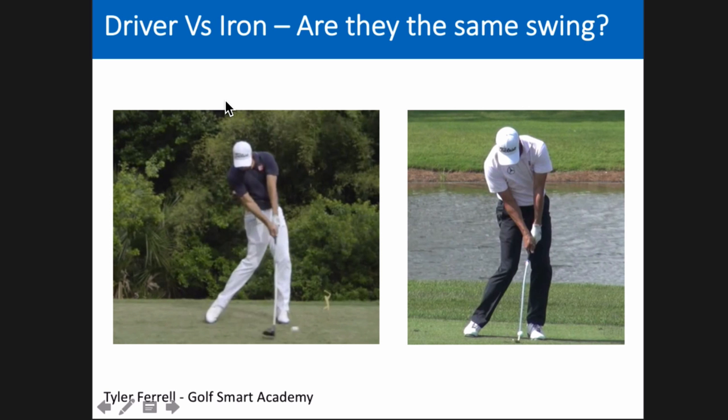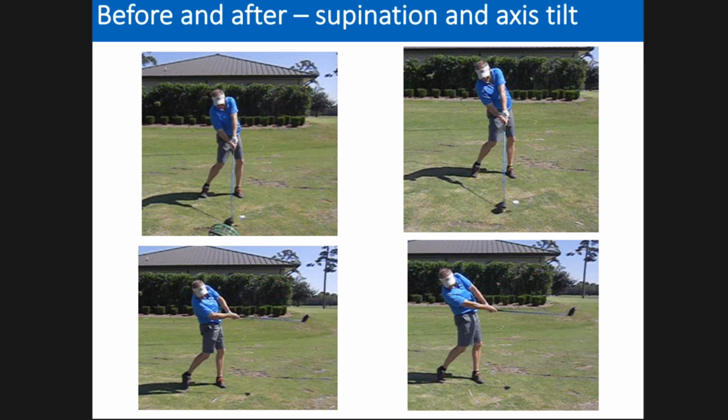The topic is looking at the 3D differences between the driver and the iron swing — basically addressing the question: is there one swing that you can use throughout the bag, or do you need to make adjustments to your swing other than just setup when going from a driver to a short iron?